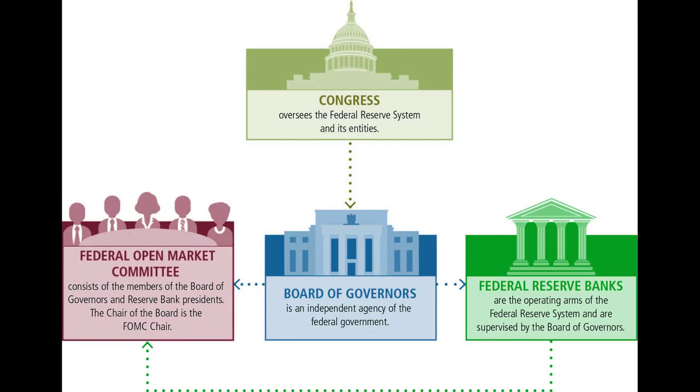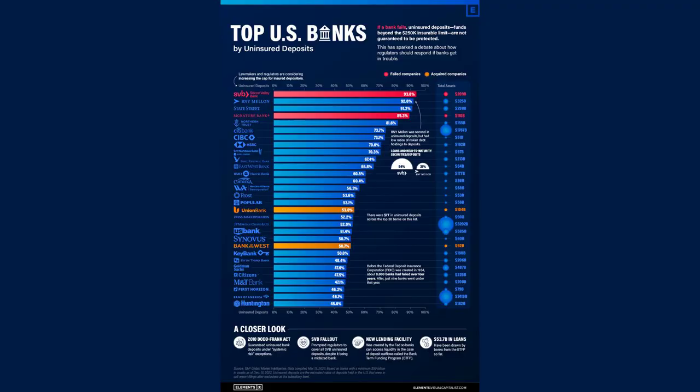One of the key features of the Federal Reserve is its decentralized structure. It consists of 12 regional banks located across the country, each serving a specific district. These banks, along with the Board of Governors in Washington DC, worked together to implement monetary policy and supervise the banking industry.